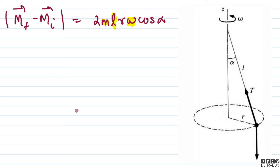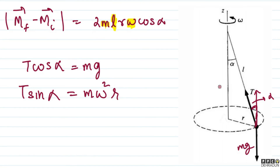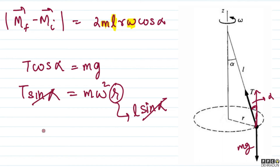Setting up force equations: T cos alpha equals mg (vertical equilibrium), and T sin alpha equals m omega squared r (centripetal force). Since r equals l sin alpha, substituting gives T sin alpha equals m omega squared l sin alpha, so sin alpha cancels and we get T equals m omega squared l.